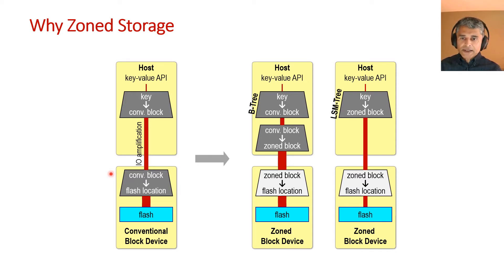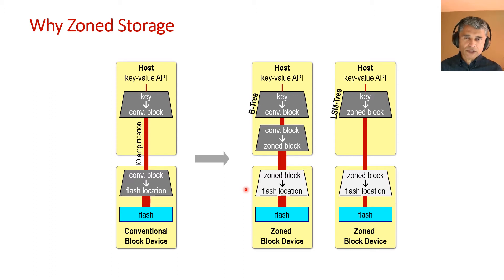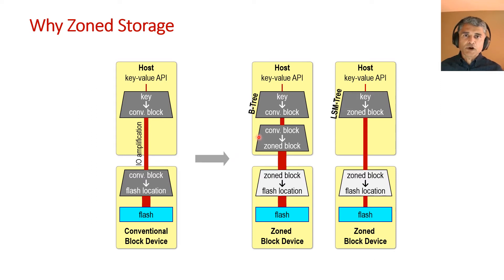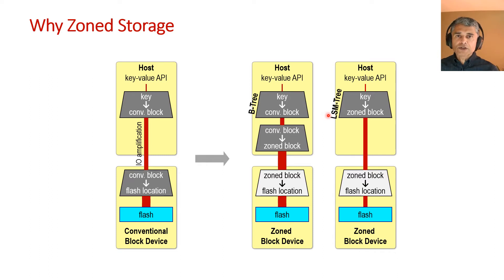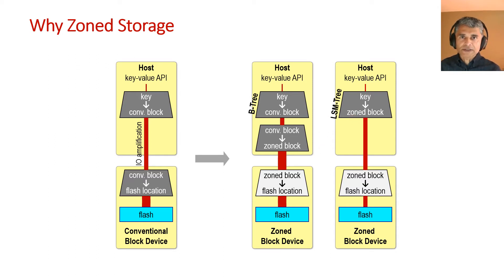In either case, the SSD can map a zoned block address to a flash location with only a light translation, without a large map or GC. With a B-tree, the heavy translation must be pulled into the host in the form of a log-structured file system or device mapper. But with an LSM tree, the key can be mapped directly to a zoned block address, thus eliminating one of the two heavy translations for good.